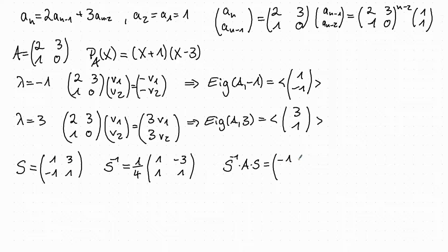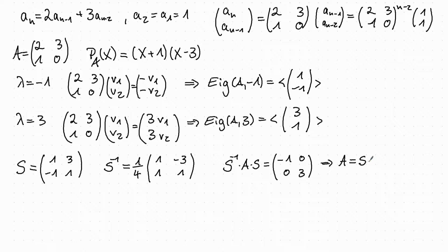So the diagonal matrix has entries -1 and 3 on the diagonal (with zeros off-diagonal). We can then write A as a product: A = S·[[-1, 0],[0, 3]]·S⁻¹.